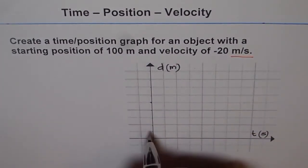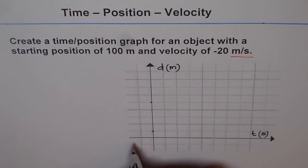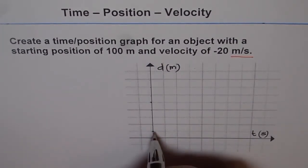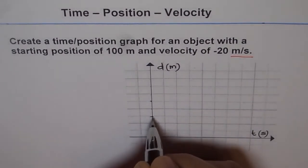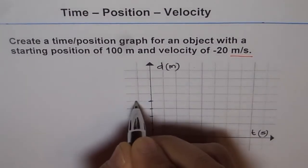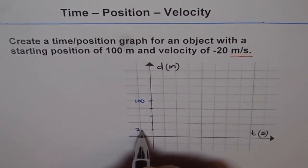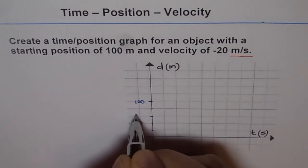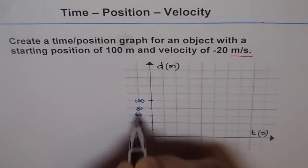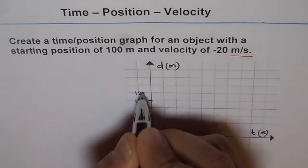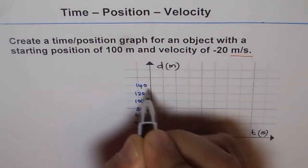So we will avoid that and we will treat every unit as 20 meters. So it is 20, 40, 60, 80, 100. So that is our 100. So we will write, we can write 20, 40, 60, 80, 100, 120, 140.